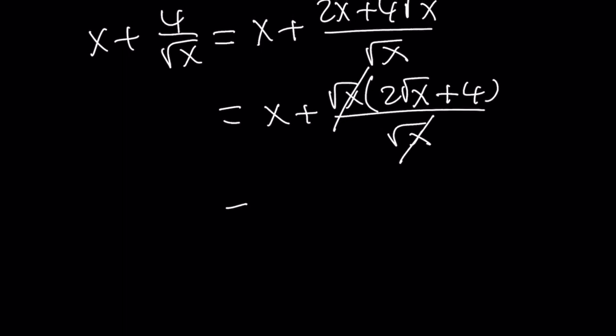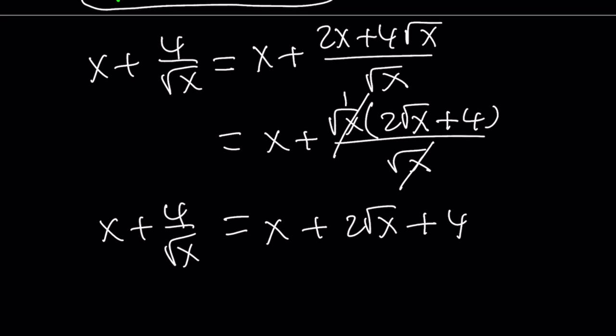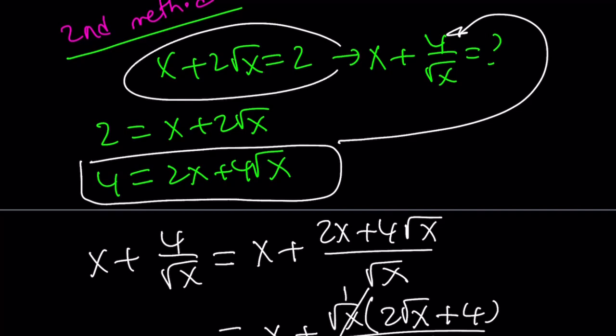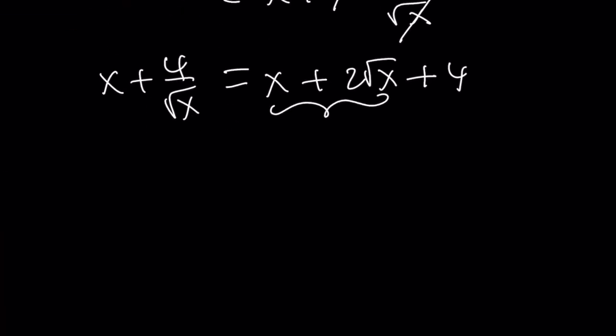We know that x does not equal 0. So from here we get x plus 2 times square root of x plus 4. Because there's a 1 here, so we don't have to worry about it. Well, wait a minute. We were trying to evaluate this and we ended up getting the expression that was given to us as 2. So we do know that x plus 2 root x is equal to 2. So this is equal to 2. But 2 plus 4 is equal to 6. So the answer must be 6.